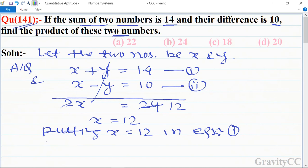12 plus y equals 14, so y equals 14 minus 12, which equals 2. Therefore, their product equals xy, which equals 12 into 2, so 12 times 2 is 24.